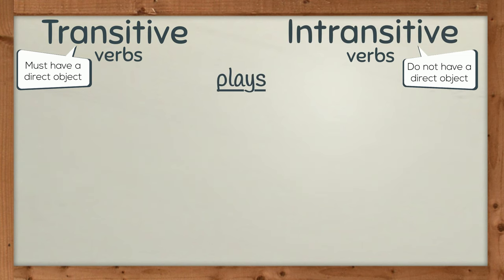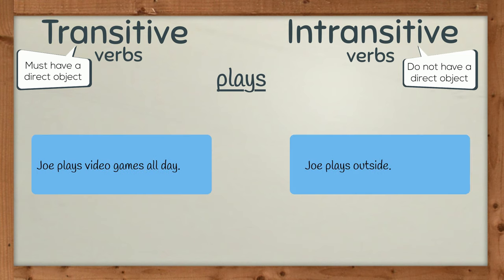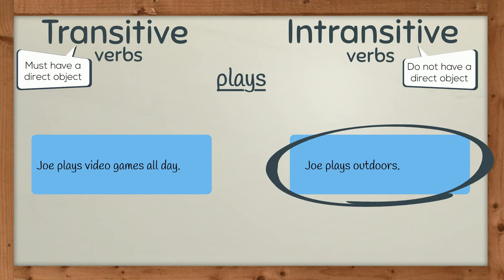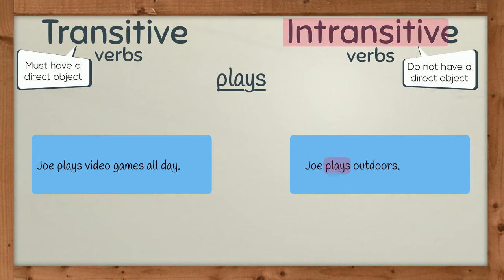Plays is another verb that can be transitive or intransitive. Joe plays video games all day. Joe plays outside. Here, the verb plays is intransitive — there is no direct object for the action to move to. In the first sentence, the verb plays is transitive. The action moves through the verb to the direct object: video games.